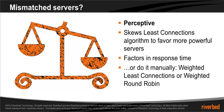Or you can do it manually by using weighted least connections or weighted round-robin. In these algorithms, you assign a weight to the servers — the larger the weight, the greater the share of traffic the server will receive.